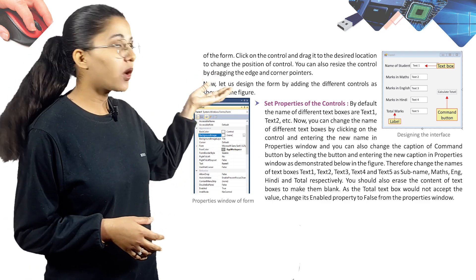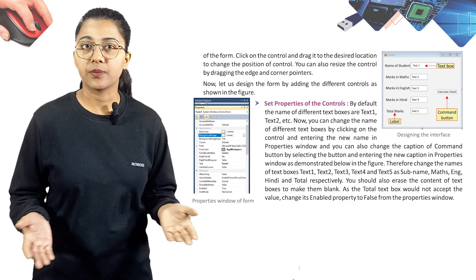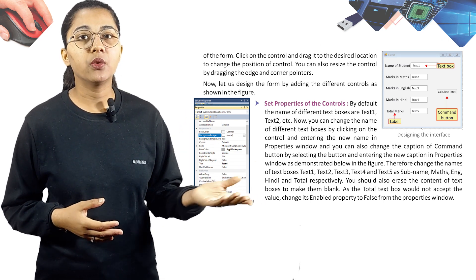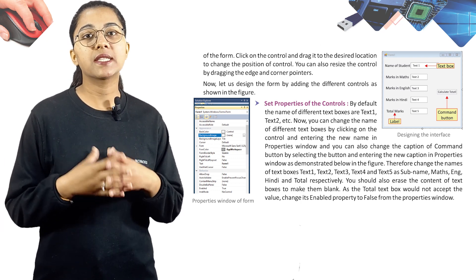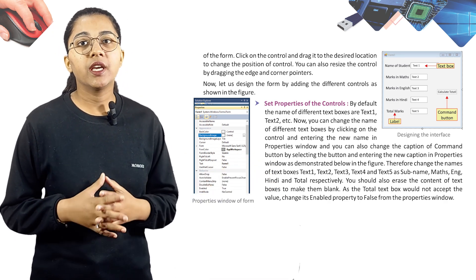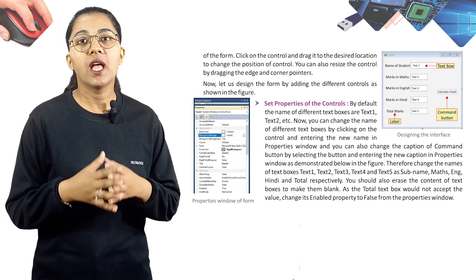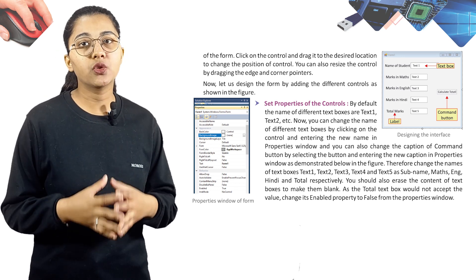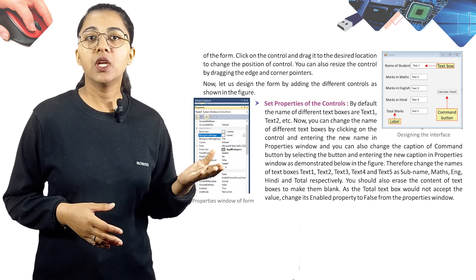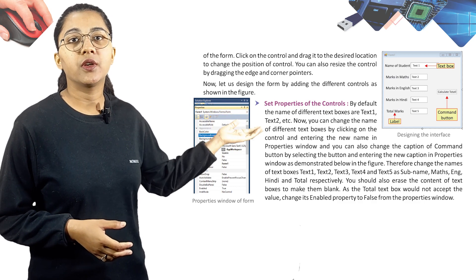Step 2: Set Properties of the Controls. By default, the names of text boxes are Text1, Text2, etc. Change the names of the text boxes in the properties window. Also change the caption of the command button. Change the names of Text1, Text2, Text3, Text4, and Text5 to Sub, Name, Maths, English, Hindi, and Total respectively. Erase the content of text boxes to make them blank. Set the Total text box's Enabled property to False.